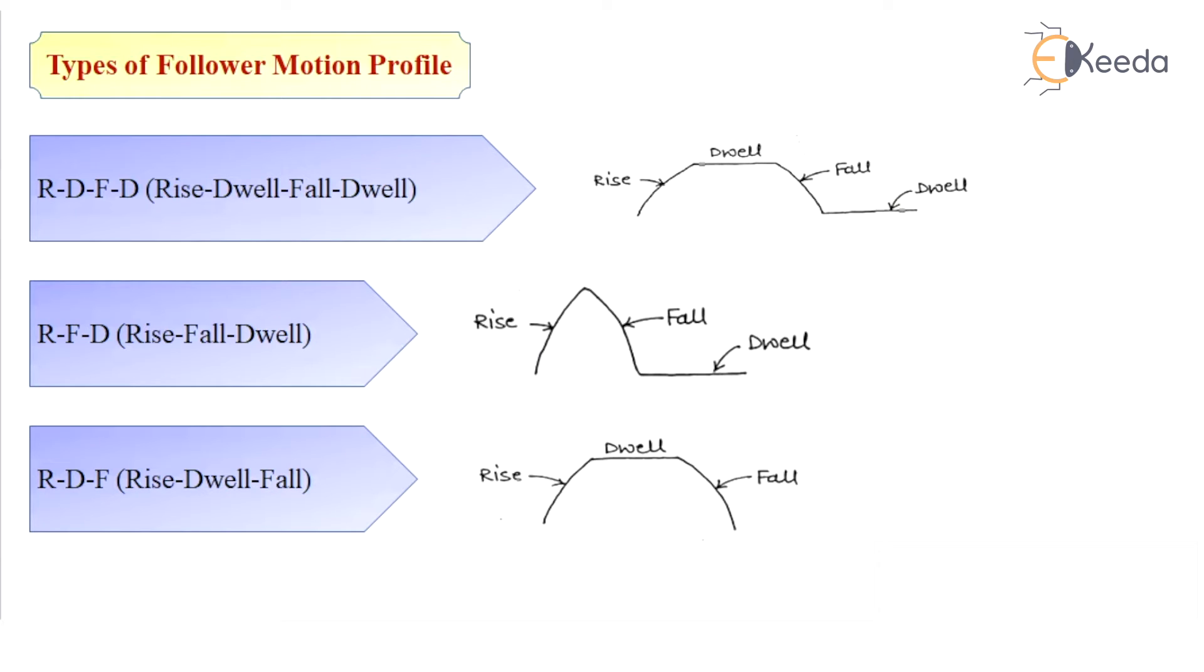The third category is RDF, stands for rise, dwell, fall. In this motion profile, the follower will move forward. It will remain at the same position for certain degrees of cam rotation, that is the dwell motion. And finally, for certain rotation, it will come back to the same position. And the cycle repeats.